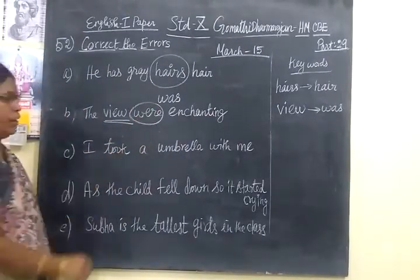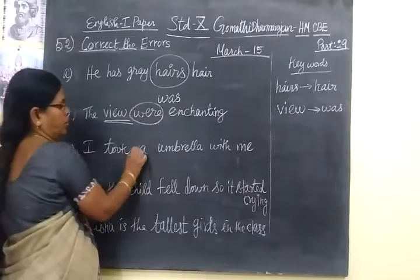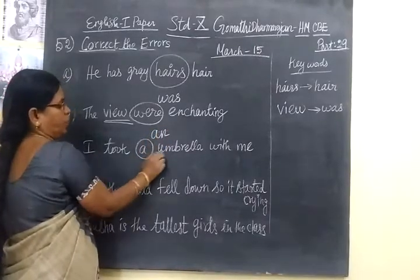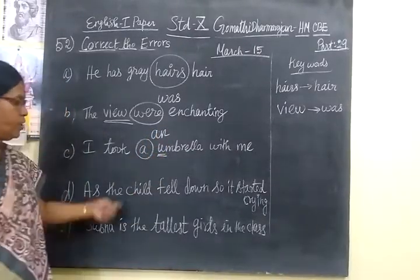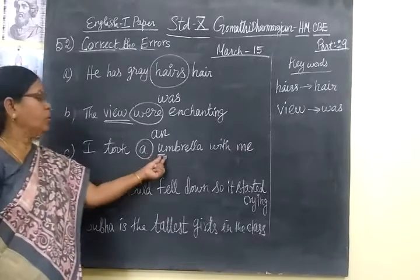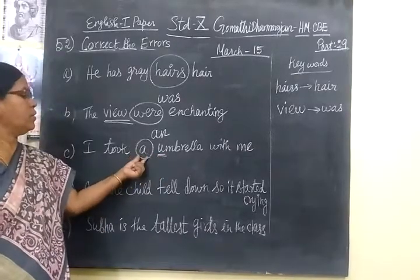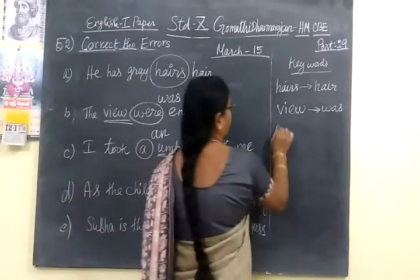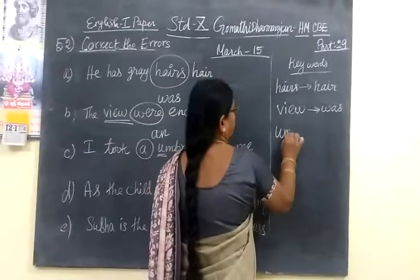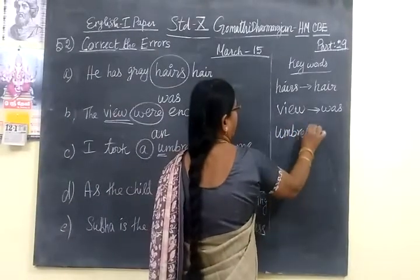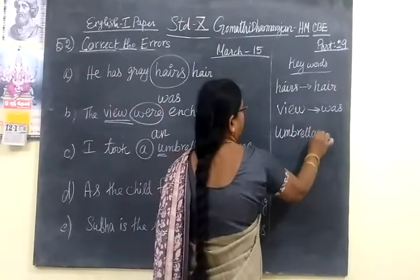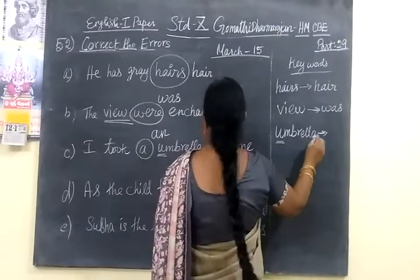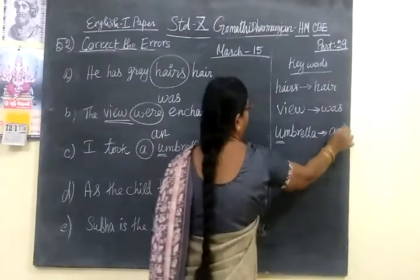Next: 'I to an umbrella.' Instead of 'a,' you have to write 'an' because 'umbrella' starts with a vowel — A, E, I, O, U. Since the vowel sound comes at the beginning of 'umbrella,' you have to use 'an' only.